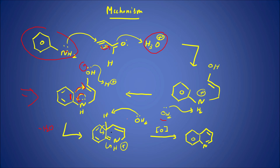Once the dihydroquinoline intermediate is formed, water in the solution allows the lone pair on oxygen to pick up H⁺. This water then attacks a hydrogen and the bond breaks, restoring resonance in the benzene ring. The N–H bond also breaks, releasing nitrogen, and the quinoline intermediate is formed. Finally, we add an oxidizing agent — arsenic acid or nitrobenzene — and we get our final quinoline product.